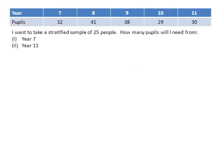Okay, so here's a table, and this table shows how many pupils are in each year. So in year 7, there are 32 pupils.